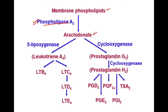This arachidonic acid is a substrate of two enzymes: 5-lipoxygenase and cyclooxygenase. The lipoxygenase enzyme causes the conversion of arachidonic acid into leukotrienes, and the cyclooxygenase causes the conversion of arachidonic acid into prostaglandins.